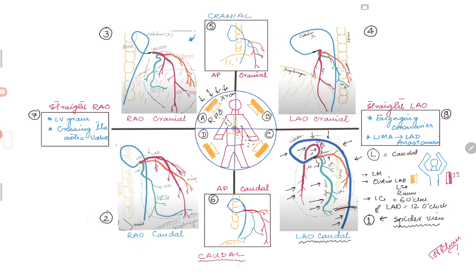Moving on to picture two: to recognize the image, look at the catheter shown in blue. It's coming below the diaphragm, so probably femoral access. It's a JL or Judkins left catheter, and here the catheter is folded on itself and retracted, so it's probably an RAO view. Since you see the diaphragm just in the corner and not in the middle of the screen, it's probably a caudal view — exactly the RAO caudal view we will be discussing.